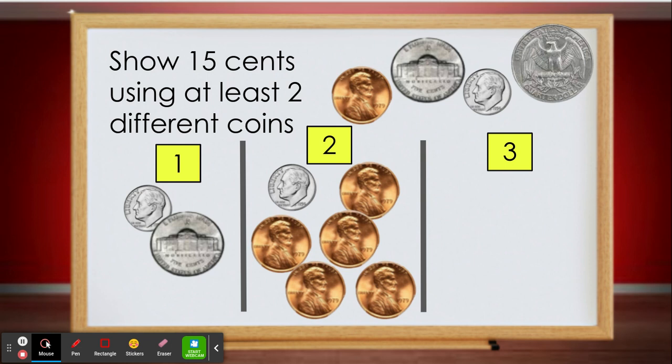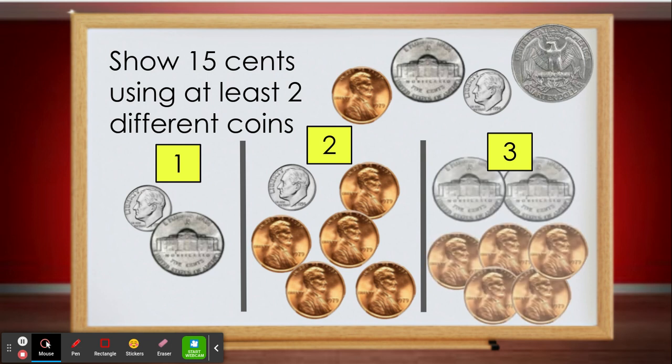And the last way I can do it is actually using my nickel. If I use 2 nickels, I know 5 and 5 is 10, and 5 pennies, that is 15 cents. Those are 3 different ways on how to make 15 cents.